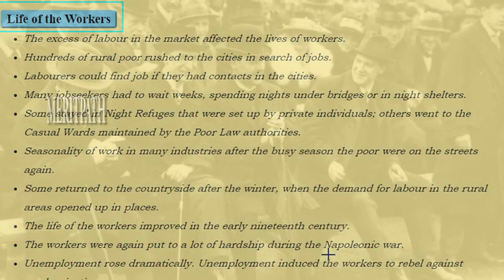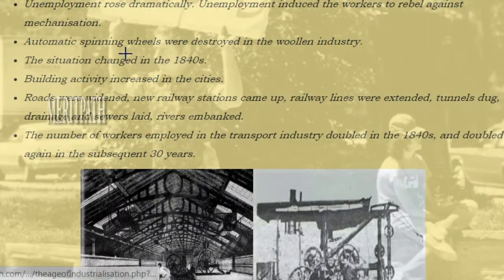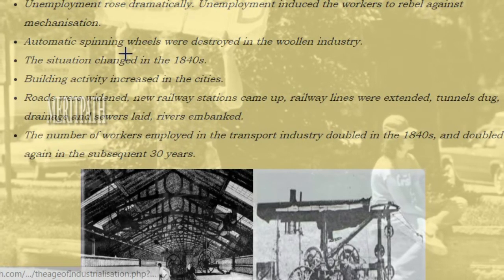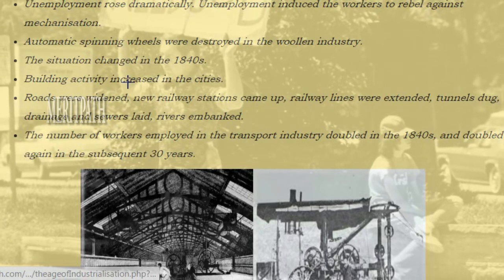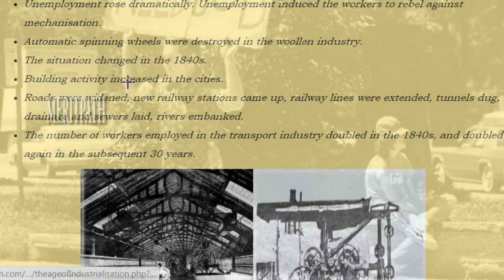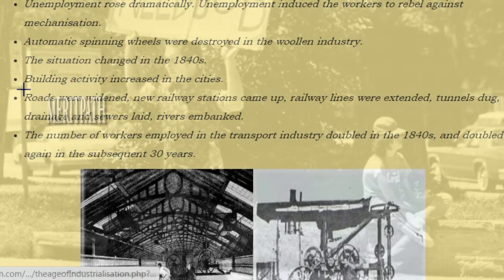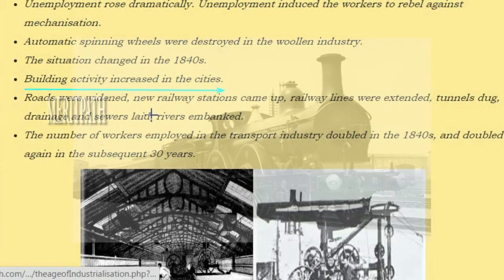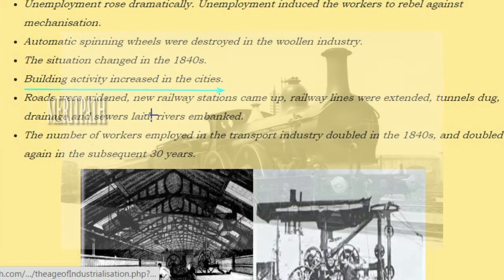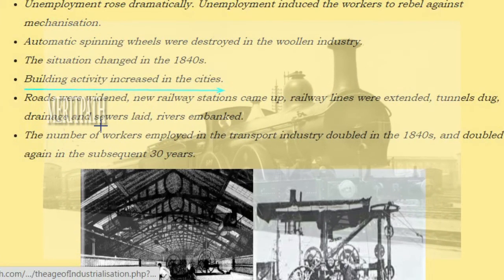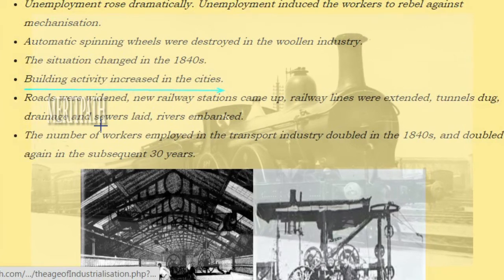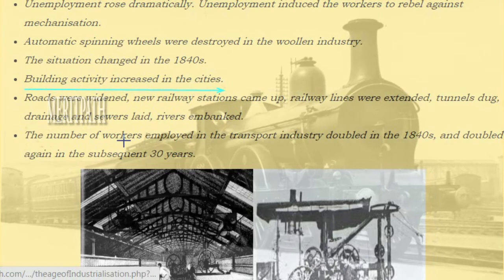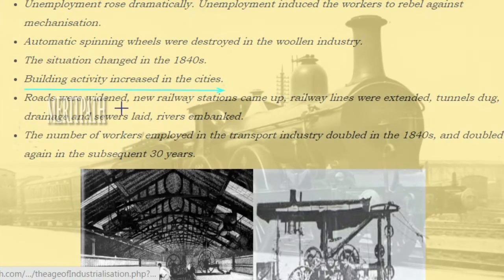The life of workers improved in the early 19th century, but workers were again put to hardship during the Napoleonic Wars. Unemployment rose dramatically. Unemployment induced workers to rebel against mechanization — automatic spinning wheels were destroyed in the woolen industry. The situation changed in the 1840s. Building activity increased in the city: roads were widened, new railway stations came up, railway lines were extended, tunnels were dug, and drainage was laid. The number of workers employed in the transport industry doubled in the 1840s and doubled again in the subsequent 30 years.